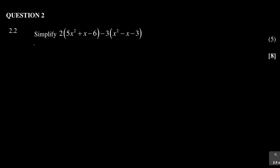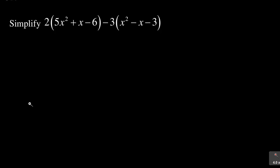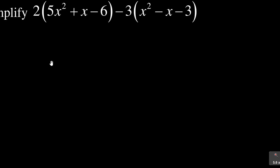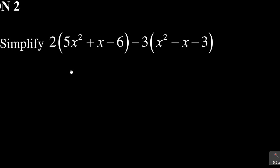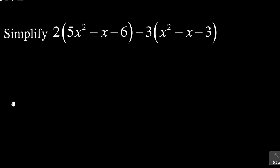Let us move on to question 2.2. We are supposed to simplify that particular expression. This is 5 marks, and the total was 8 marks, meaning question 2 had only 2 sub-questions. Remember it's 5 marks which is good. If you look at this particular question carefully, we have some brackets, and it is just a continuation of the previous question in a way, but now including brackets and multiplication.